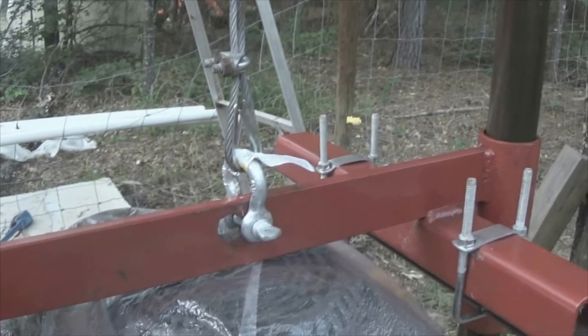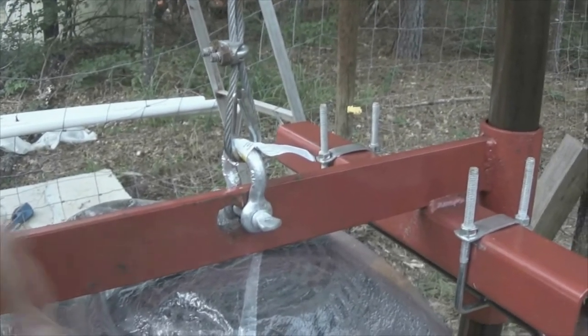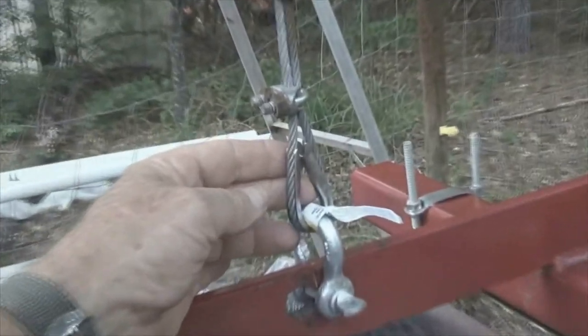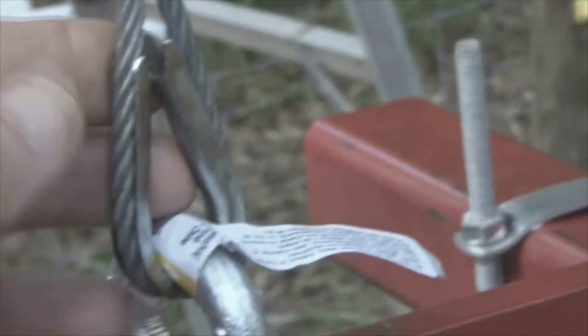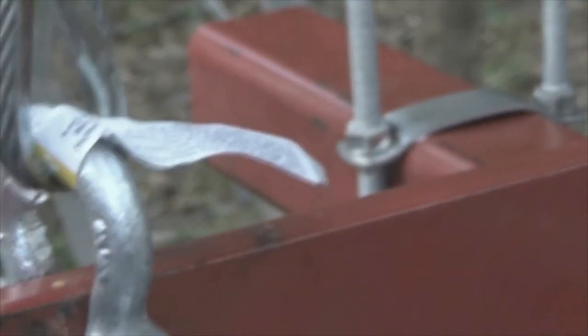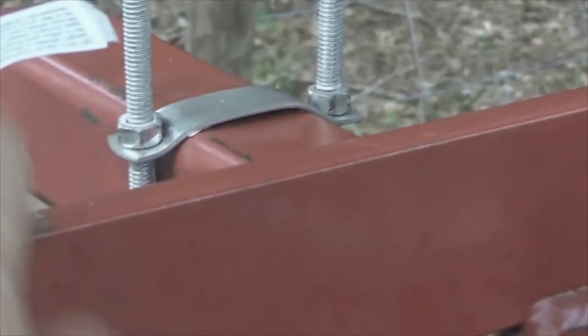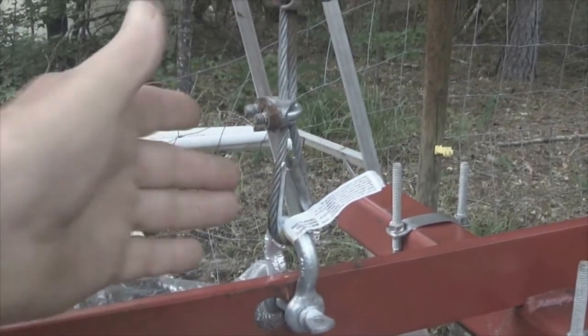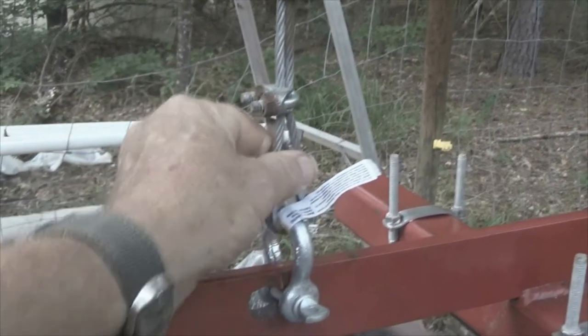The only modification that I've made to this thing outside of drilling this hole is I put a thimble on my cable to make sure that it couldn't bend too tight. When cables are pulled too very tightly it actually damages them and this thimble will prevent that from happening. So I would tell you to go ahead and put a thimble on it.